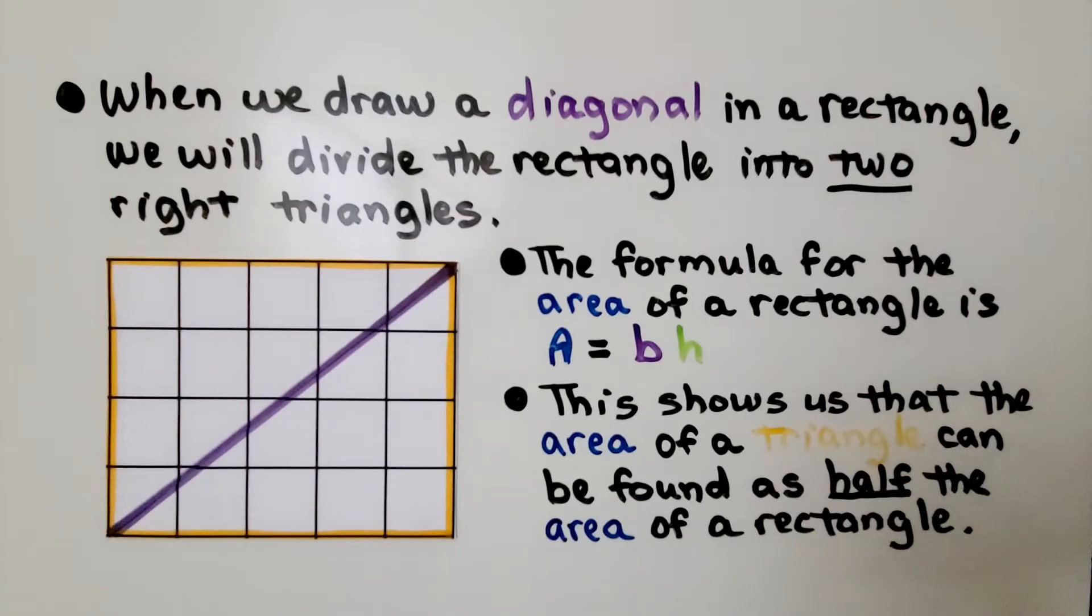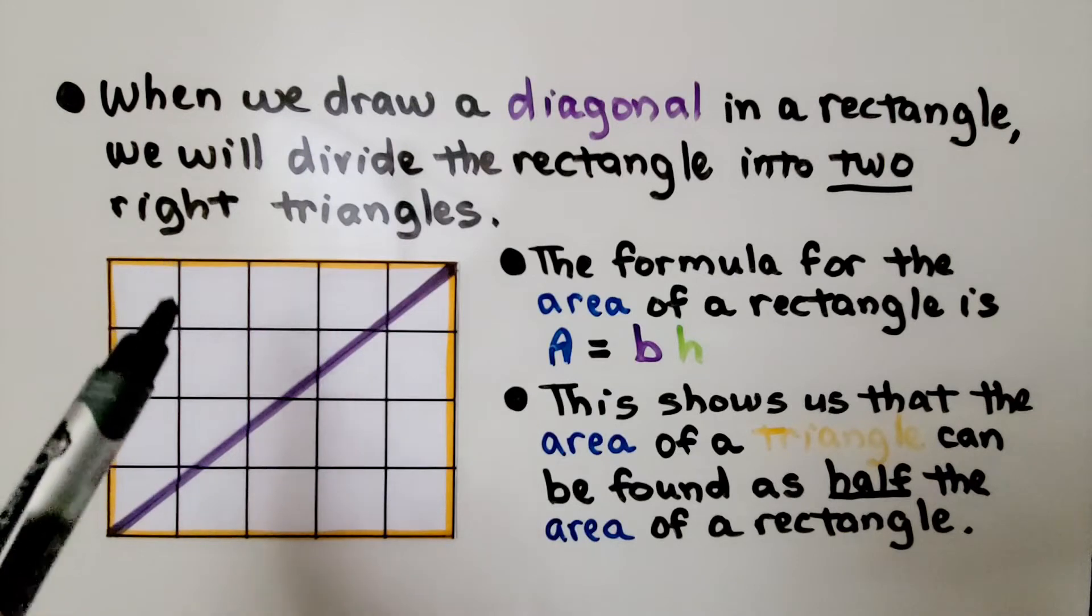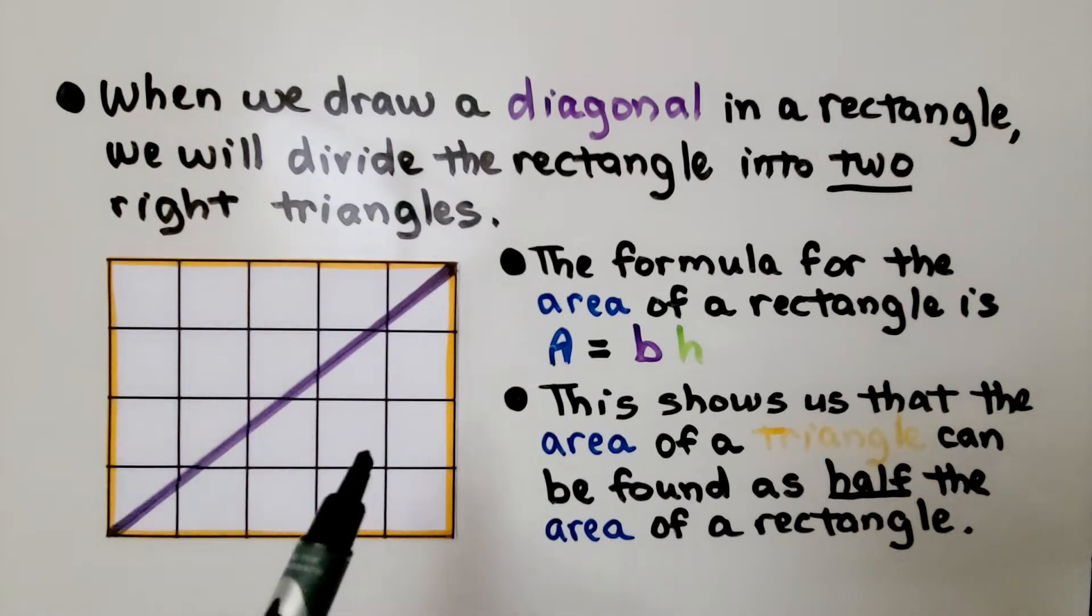When we draw a diagonal in a rectangle, we'll divide the rectangle into two right triangles. We have a right triangle here. Here's the 90 degree corner. And we have a right triangle here. Here's the 90 degree corner.